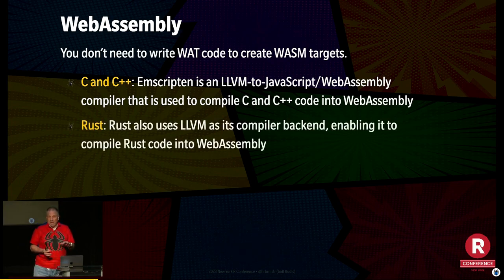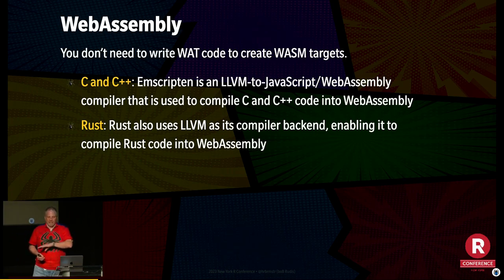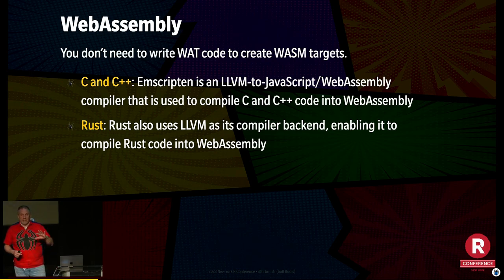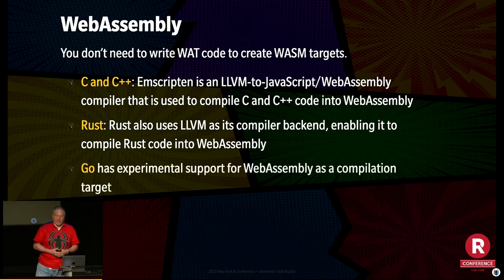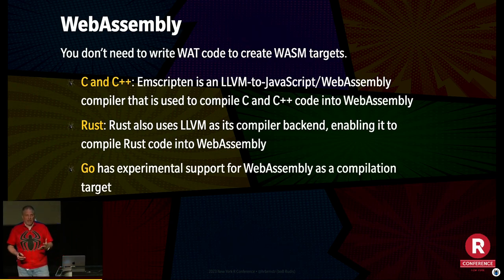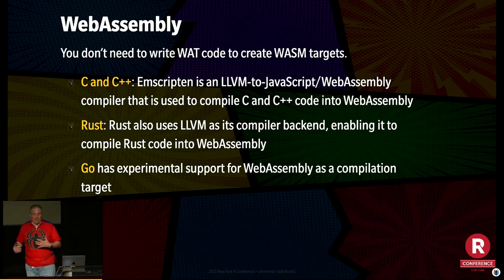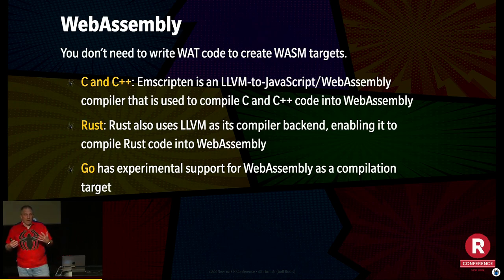Rust — which is up there with my favorite languages along with R — has LLVM as a back end already. It's actually a lot easier to write Rust code that works in WebAssembly than C. And Go, another language I use at work, has experimental support for WASM as well, and it's still experimental even now. Lots of modern, useful languages are plugging themselves into WebAssembly.